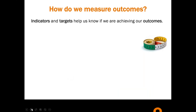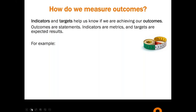So how do we measure? We set targets and indicators. We use indicators and targets to help us know if we're achieving our outcomes — this is the middle step before we start putting together questionnaires and things. The questionnaire is often the tool. Let's go through this: outcomes are statements, and indicators, metrics, and targets are expected or hoped-for results.